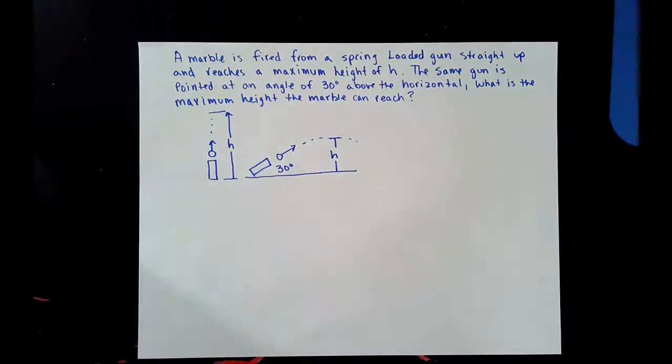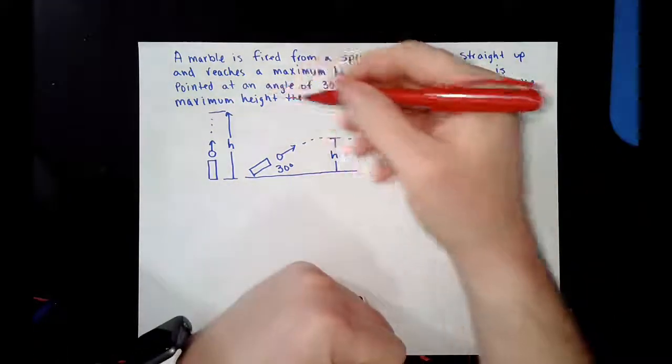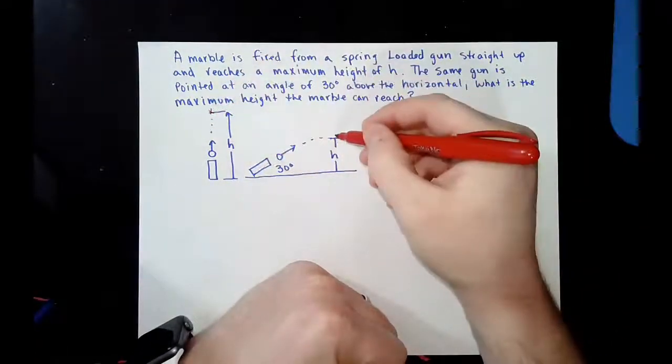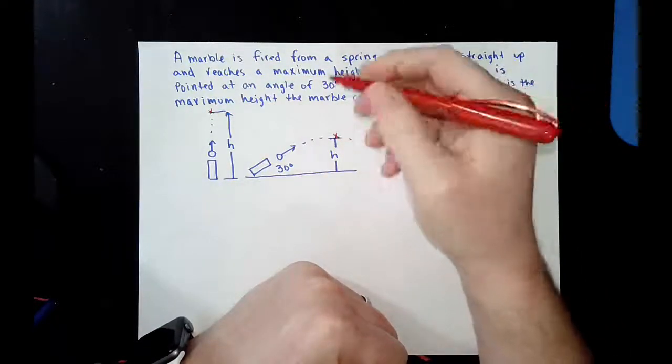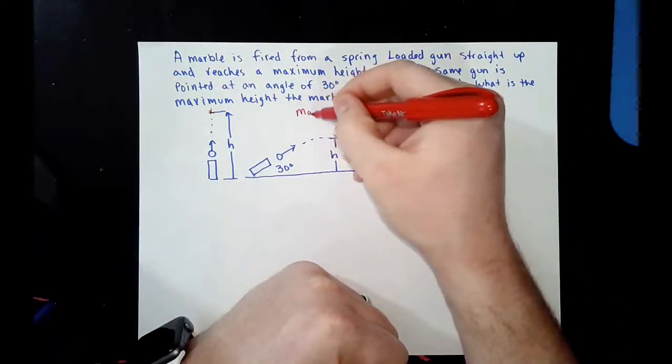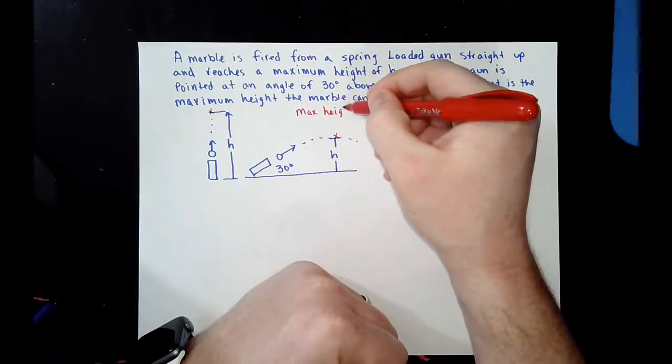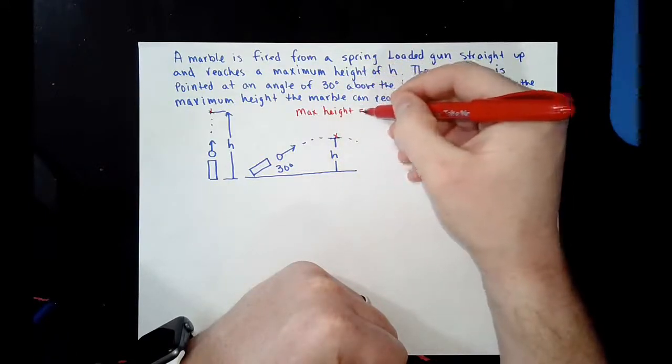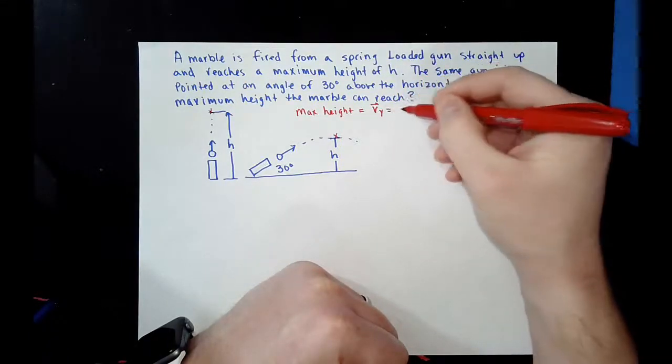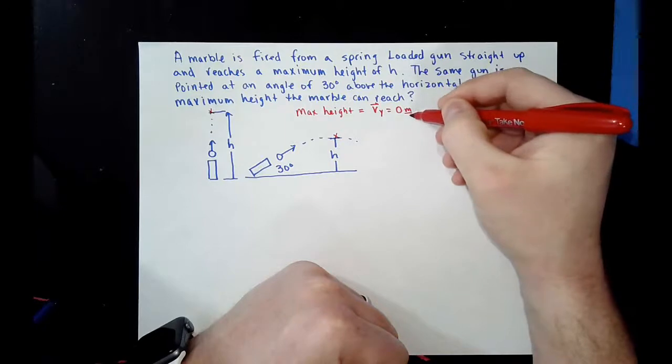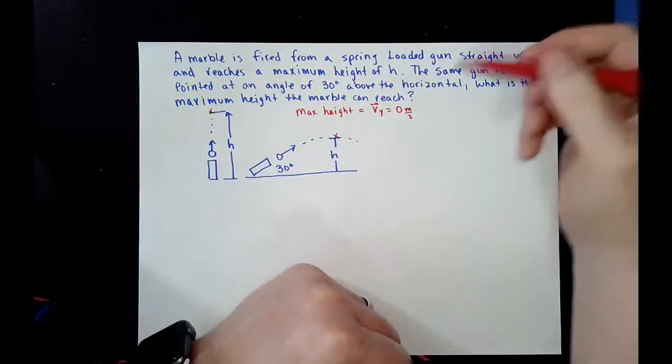The first thing we have to do is figure out our variables. Well, we know at max height for both situations, the marble's vertical velocity, so the velocity in the y direction, is 0 meters per second.